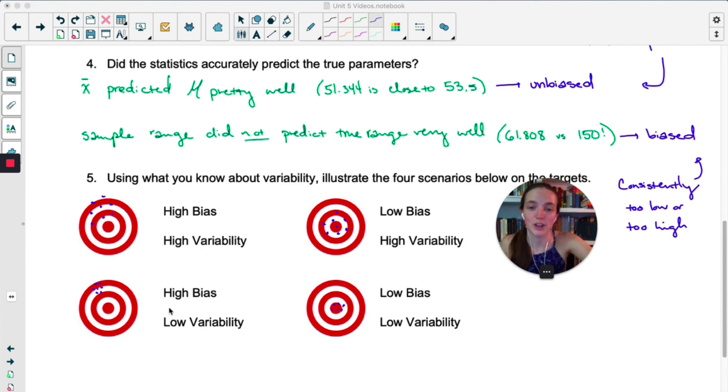Now variability we've already talked about quite a bit in this course. So you can see in the top two targets high variability means the dots are spread out. In this example they are centered around the center of the target and in this one they are centered elsewhere, but in both they are spread out from each other. Whereas down here for low variability, they're close together. So here we have high bias, they're consistently not where they're supposed to be, but low variability, they are tightly packed together. And here is the ideal. You have a statistic that has low bias, it's right where it's supposed to be, and low variability. There's not a lot of difference in those dots, they're tightly packed.